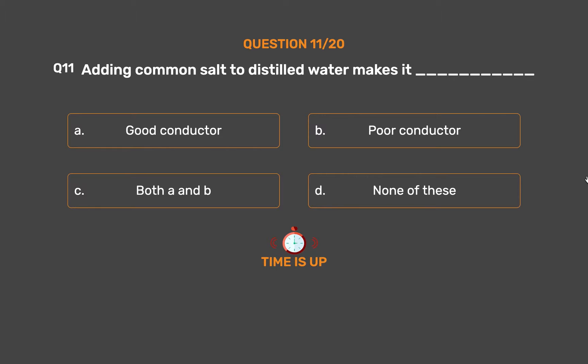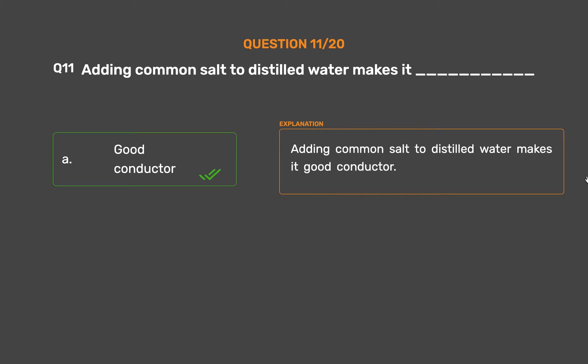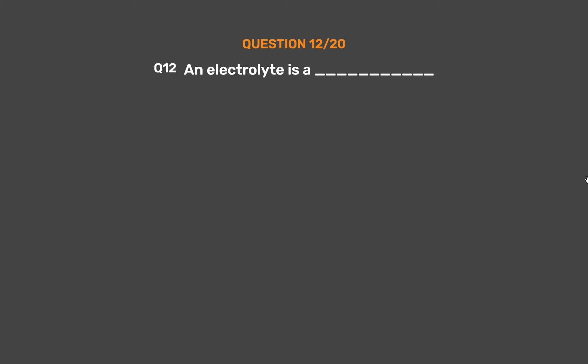The correct answer is Option A: Good conductor. Adding common salt to distilled water makes it a good conductor.